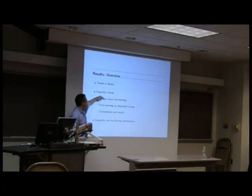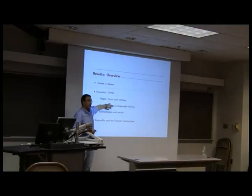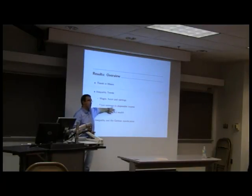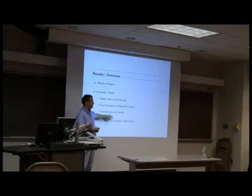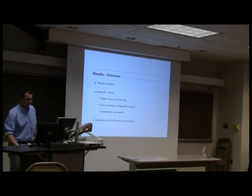I'll start with means, to give a sense of economic growth and to what extent the micro data resemble the macro data, and then talk about inequality — first wages, hours, and earnings, the stuff typically taken as exogenous in complete markets models. Then I'll go from earnings to disposable income, to document how important government redistribution and transfers are in shaping inequality. And finally from disposable income towards consumption and wealth, as the more endogenous variables in our theories. Then I'll talk briefly about the German reunification.